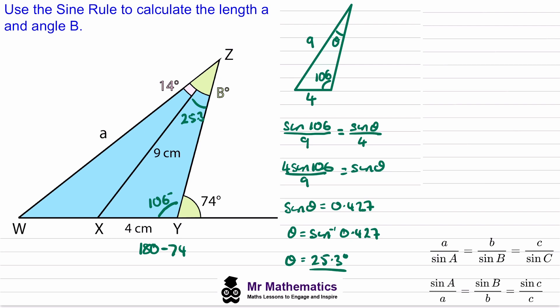So now we can work out WZY this angle as 14 plus 25.3 which is 39.3 degrees.